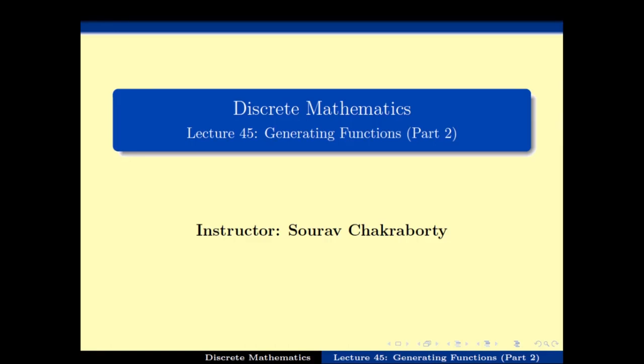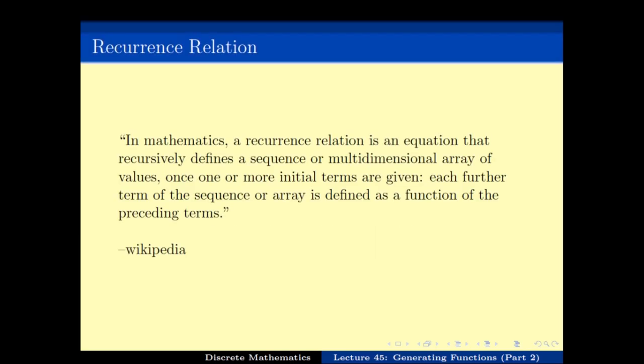Welcome back. We have been looking at recurrence relations and how to solve them using generating functions. To quickly recap, a recurrence relation is basically a sequence of numbers where the initial set of numbers are given and the nth term of the sequence is given as a function of the previous terms.